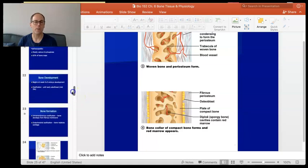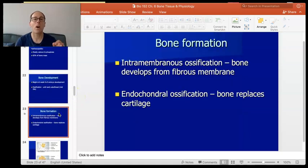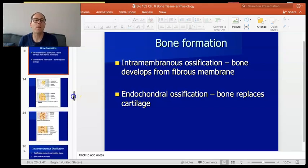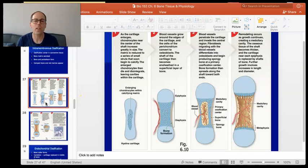The other kind of ossification is called endochondral ossification. Chondral refers to cartilage. In endochondral ossification, we're going to take a structure that looks like a bone but it's made of hyaline cartilage, and we're going to replace that hyaline cartilage with bone tissue.